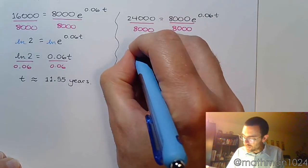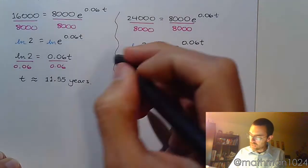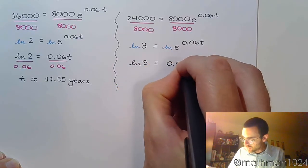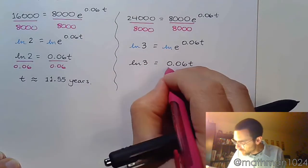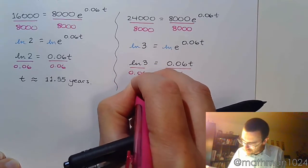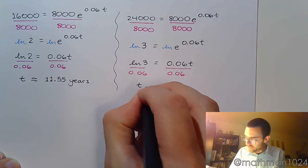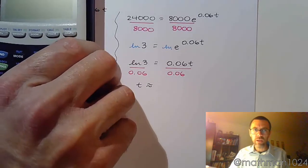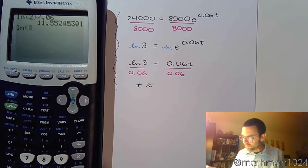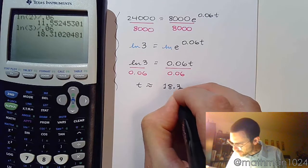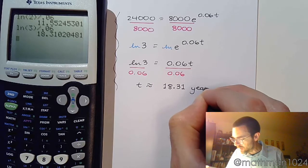Now we take the natural log of both sides. The natural log of three equals 0.06 times T. Dividing both sides by 0.06, we can calculate that T equals the natural log of three divided by 0.06, which is approximately 18.31 years — and of course that has to be more than the 11.55 years it took to double.